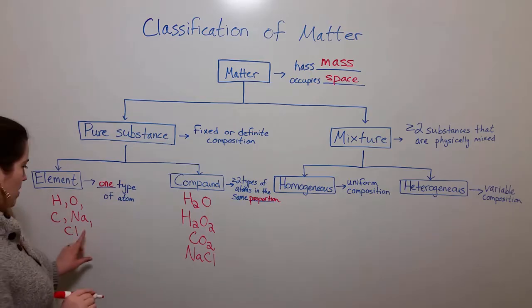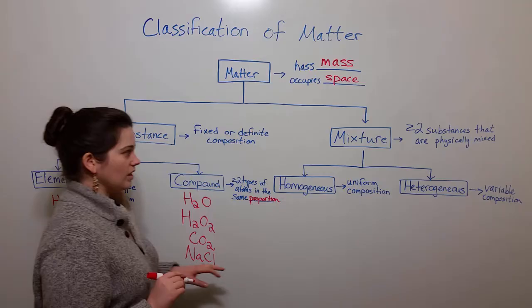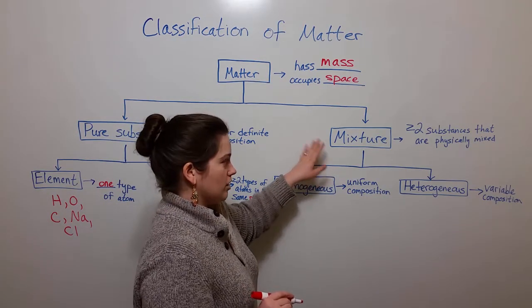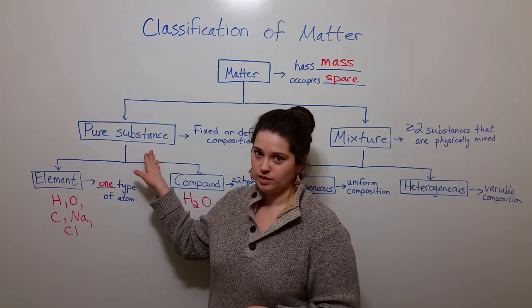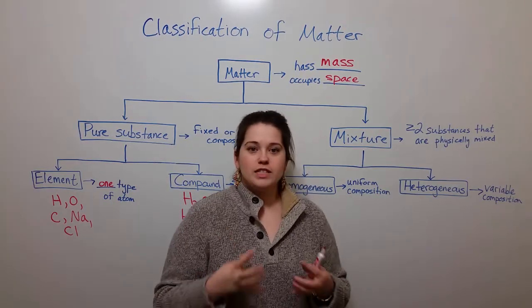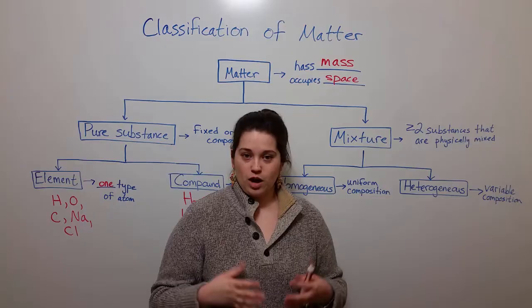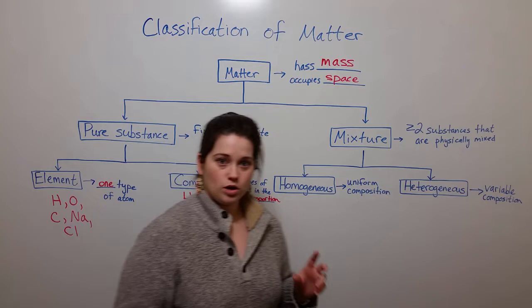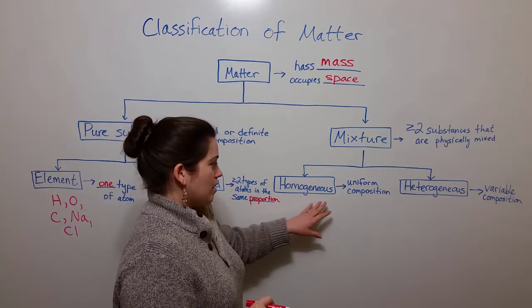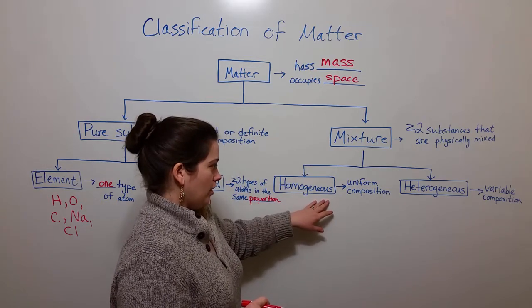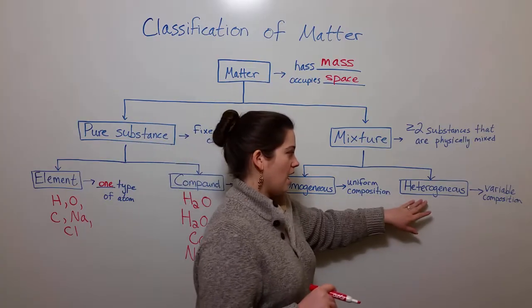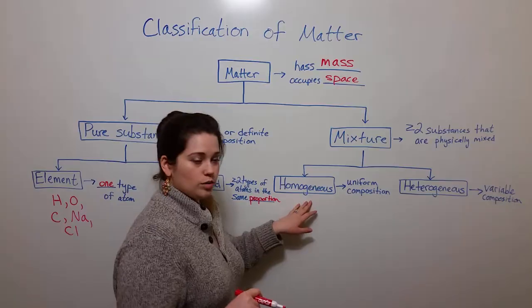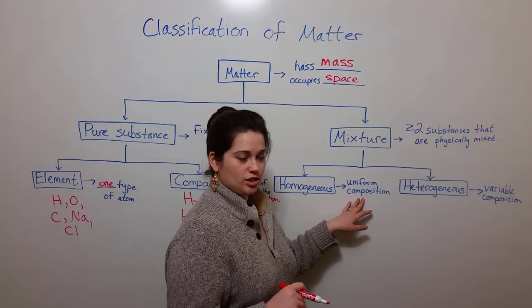Now let's go back to talking about mixtures. Remember that mixtures are made of two or more pure substances that have been physically combined, but they're not chemically combined. So there aren't chemical bonds between the individual components. They can be subdivided further into homogeneous mixtures or heterogeneous mixtures. Homogeneous mixtures have a uniform composition.